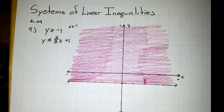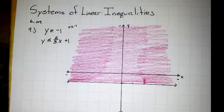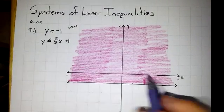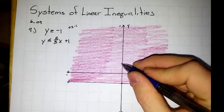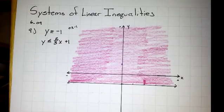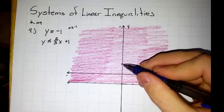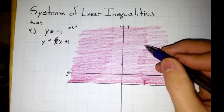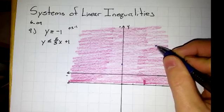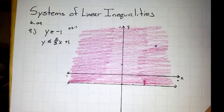Now that that region is done, let's go ahead and graph the second linear inequality. It has a y-intercept of 1, right here, and has a slope of 2 thirds. It says from this point you go up 2 units and over 3 units. We have the two points we need for our line.